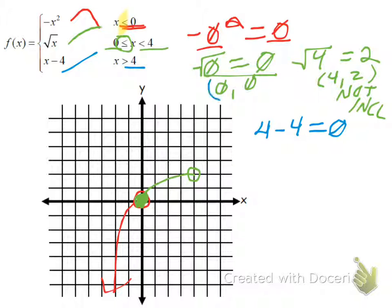This will give me the ordered pair four, zero. Because I plugged in four, I got zero. So this I know is not included. This point is not included. I know that because it says greater than, it does not say greater than or equal to.